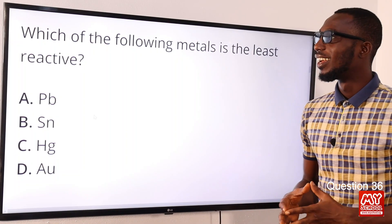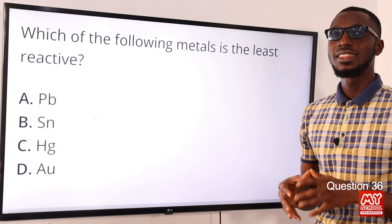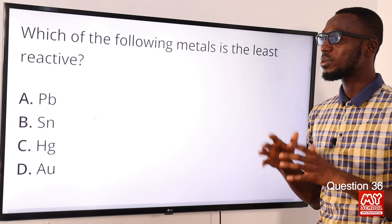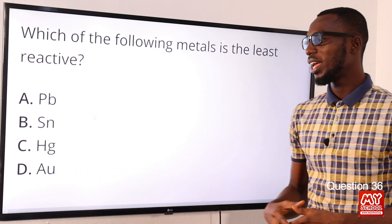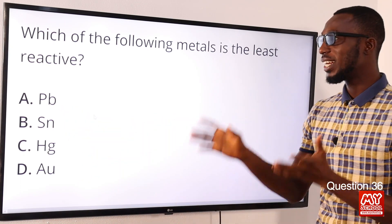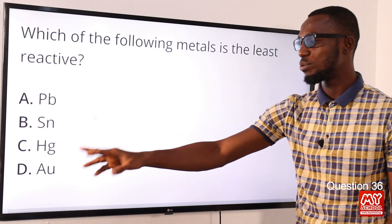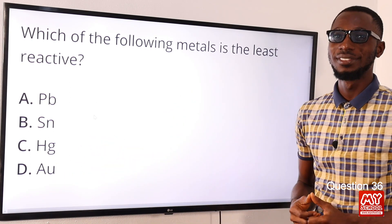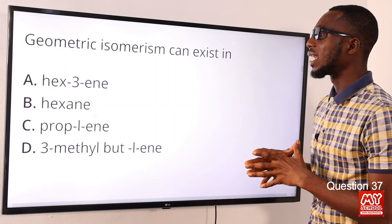Question 36: Which of the following metals is the least reactive? Checking the electrochemical series, we have gold (Au), silver, tin, and lead listed. The least reactive metal among these is gold (Au). Option D is the correct option.